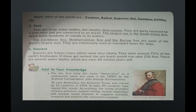Seas are large water bodies, but smaller than oceans. They are partly enclosed by a landmass and are connected to an ocean. The largest sea is the South China Sea, which holds hundreds of islands. The Caribbean Sea, Mediterranean Sea and Bering Sea are among the world's largest seas and are extensively used as transport lanes for ships. Glaciers are frozen rivers which move very slowly, storing around 75% of the earth's fresh water. If these melted, sea levels would rise up to 230 feet. There are ancient glaciers which are even 40 million years old.